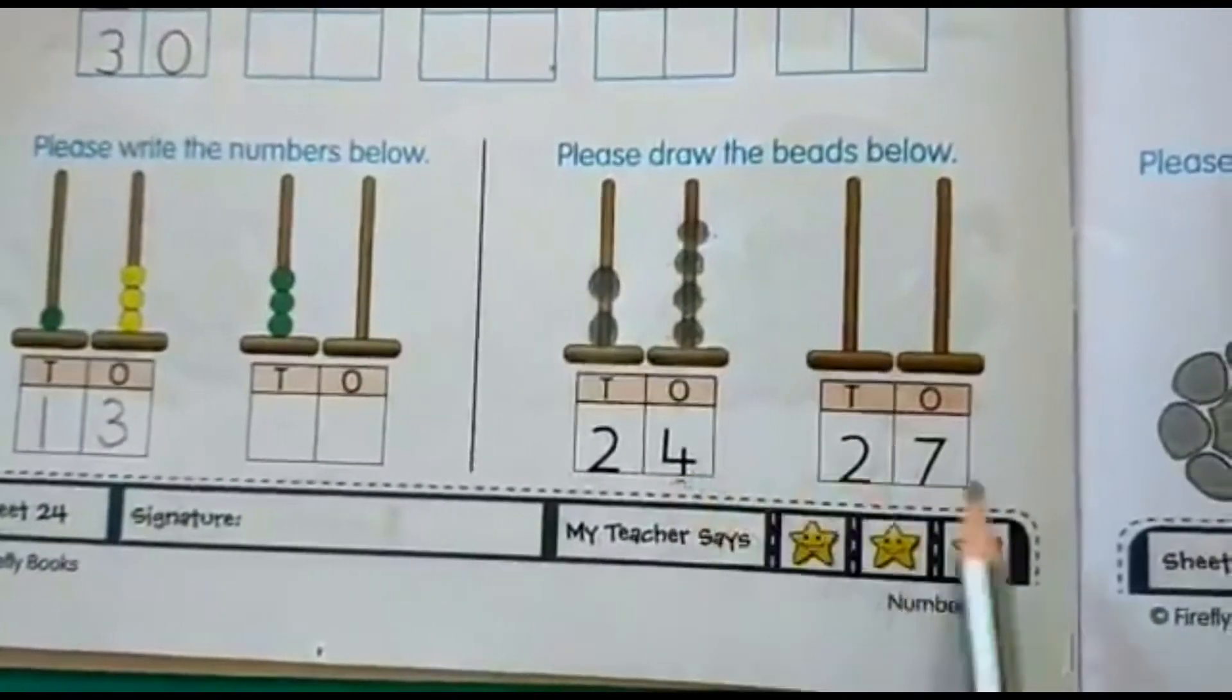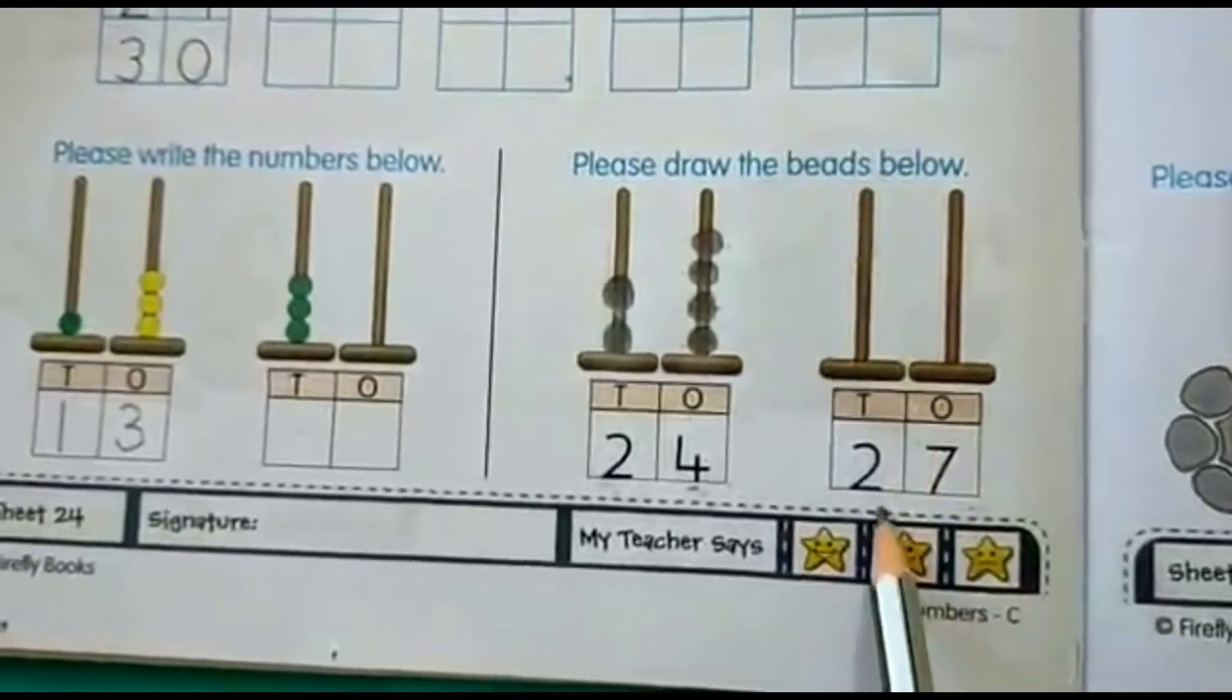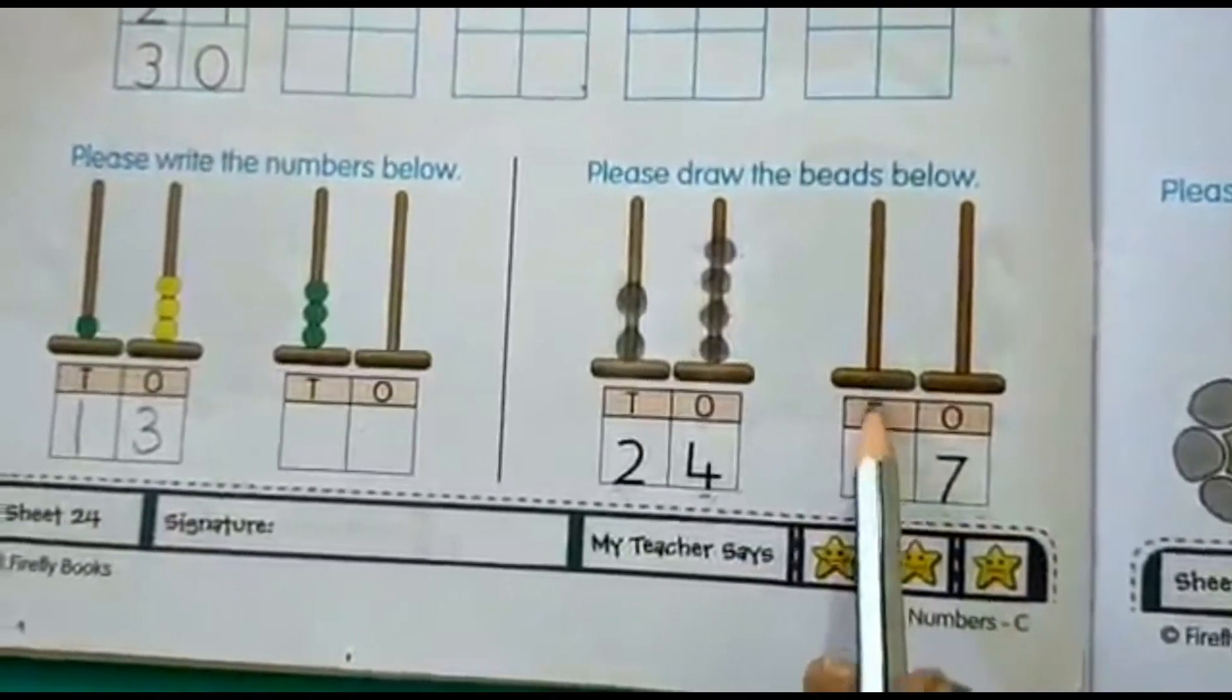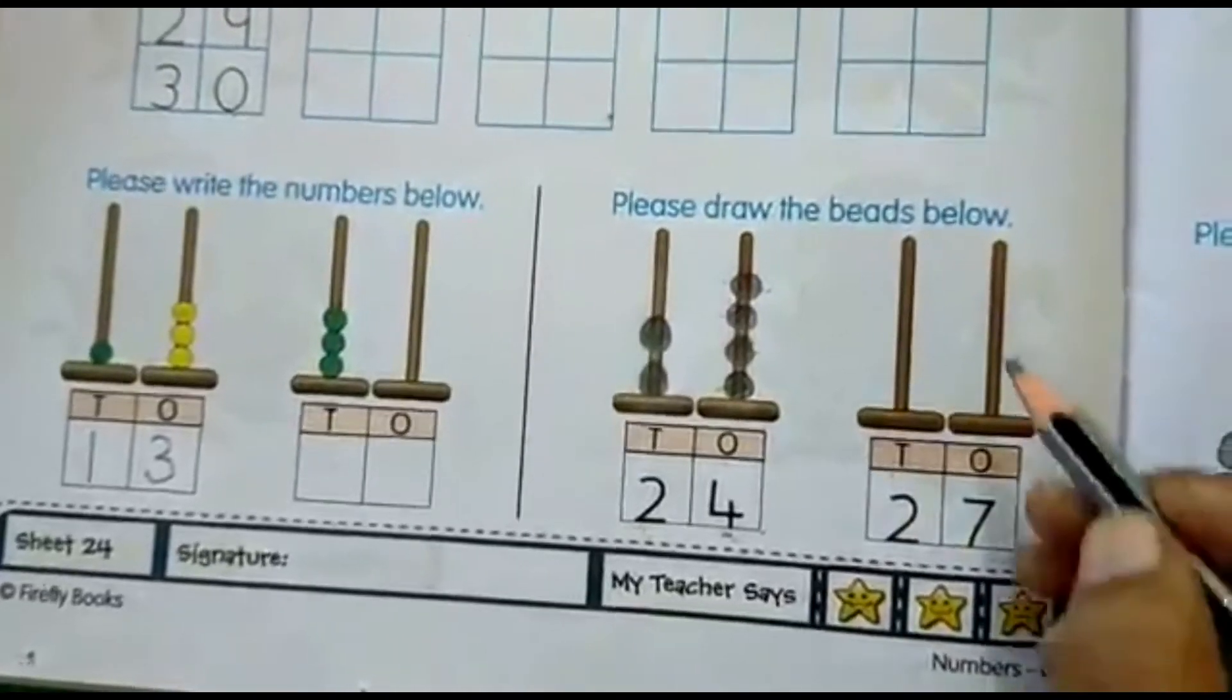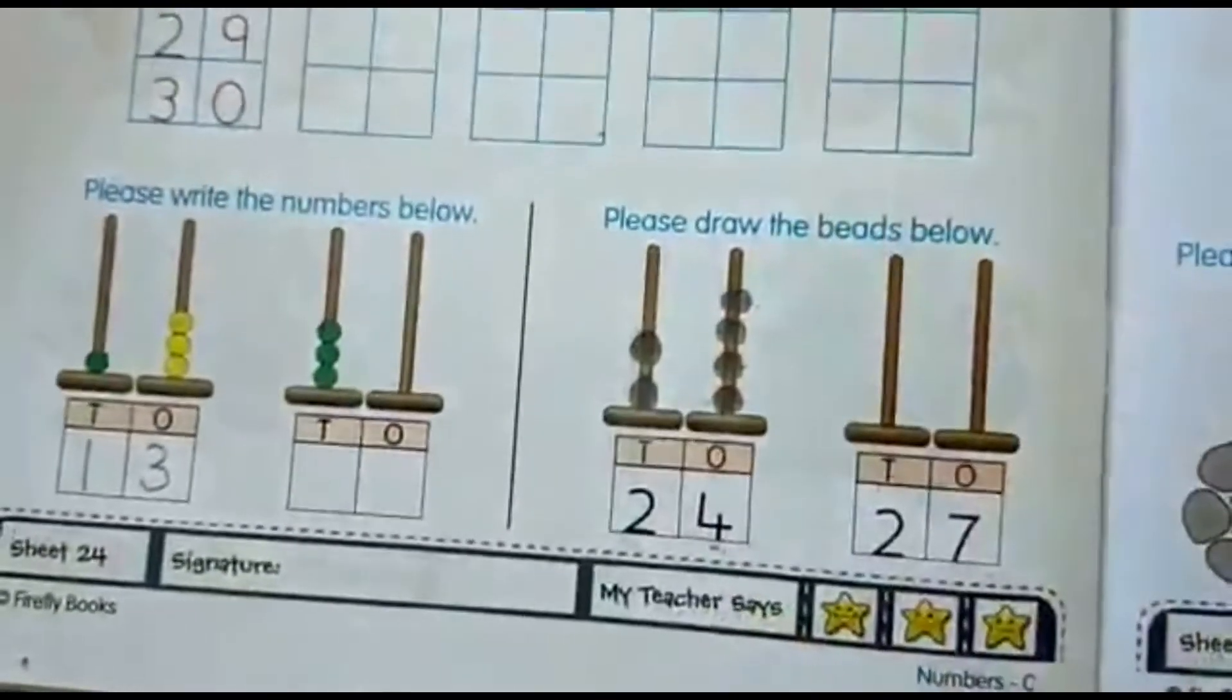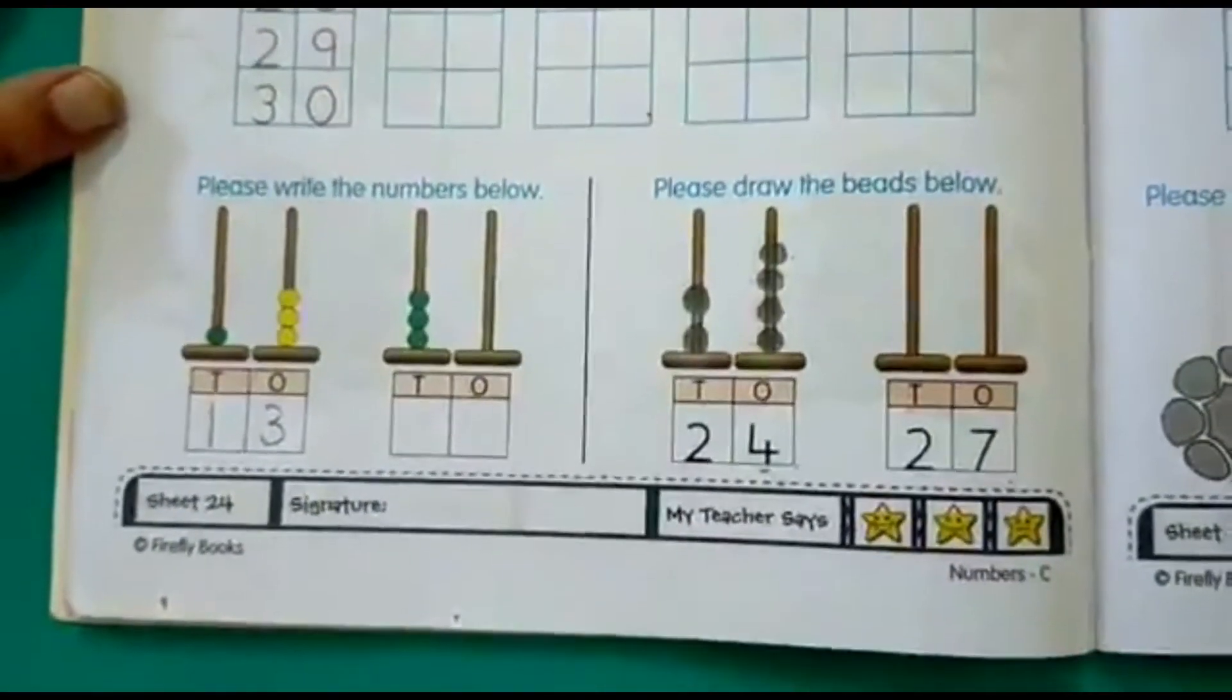Okay? Now in the same way, you have this next number, 27. So you have to check how many beads you will draw on the tens side and how many beads you draw on the ones side. This is how you are going to complete this activity. That's all for today, children. Thank you.